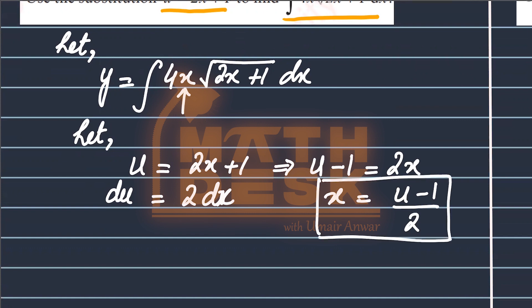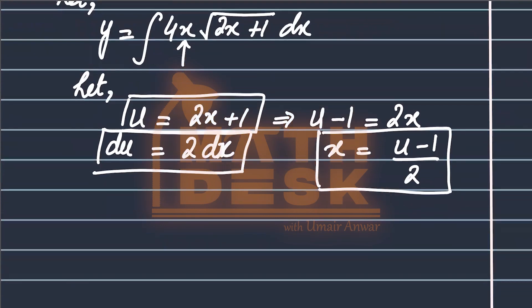This means that we have three substitutions here will be made. And I will put the three blocks in the block. Now we will write that y is equal to integral 4 as it is. We will write that u minus 1 upon 2, and the root of u is equal to root of u.